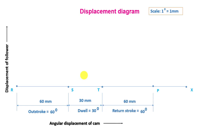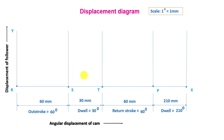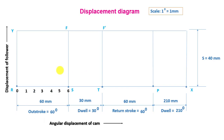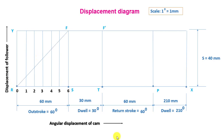Mark TP = 60 mm for the return stroke and PX = 210 mm for the dwell. Draw vertical lines from points R, S, T, P, and X with height equal to the stroke of the follower (40 mm) and complete the rectangle. Divide the outstroke into six equal parts and draw vertical lines through each point. Join points R and F — since the follower moves with uniform velocity, the displacement diagram consists of straight lines.